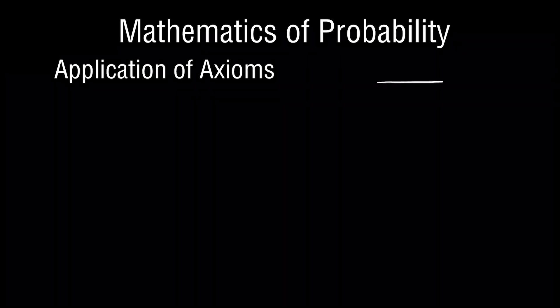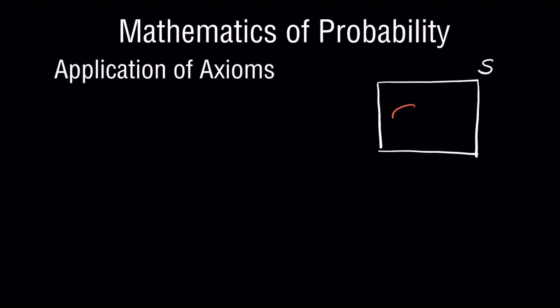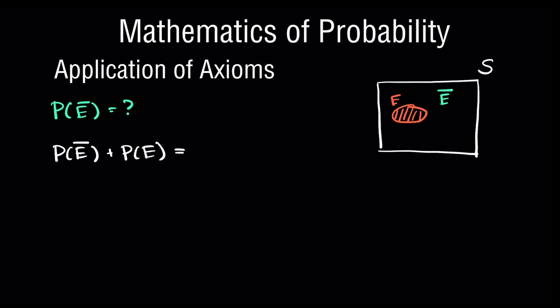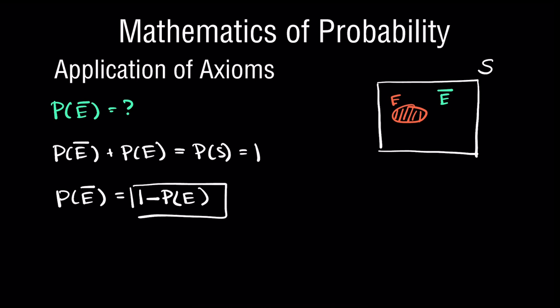To show how those axioms allow us to explore other problems: given a defined sample space and an event E highlighted in orange, we're interested in the probability of the complementary event — the sample space lying outside of E. These two events are mutually exclusive and the summation of their probabilities should cover the full sample space and equal one. Therefore, the probability of the complementary event is simply one minus the probability of E. So if an event has probability 40%, the complementary event has probability 60%.